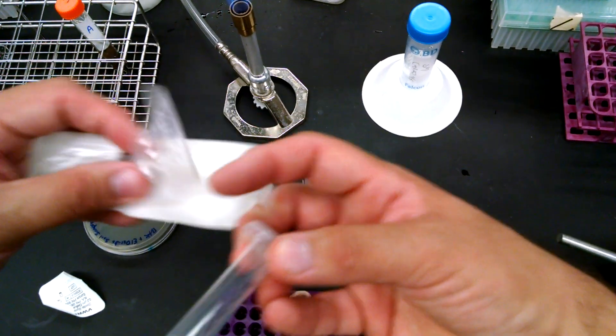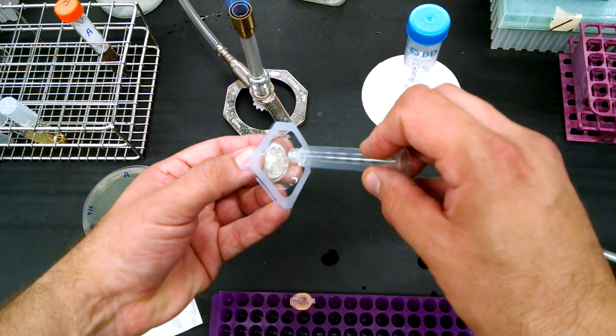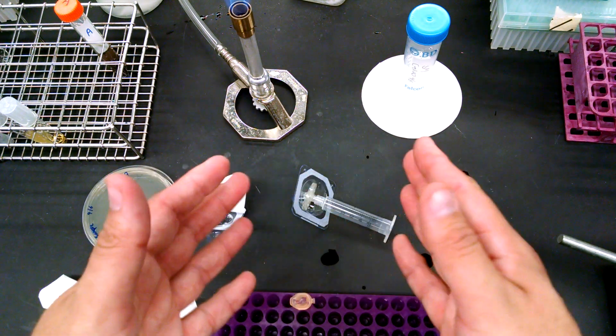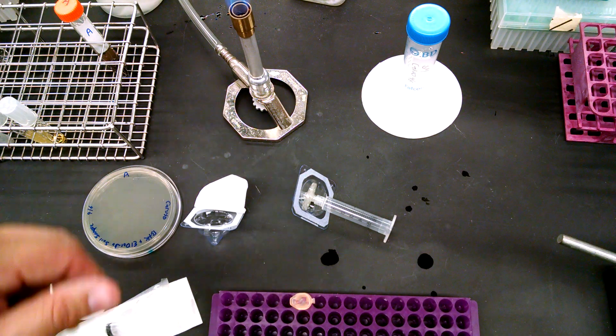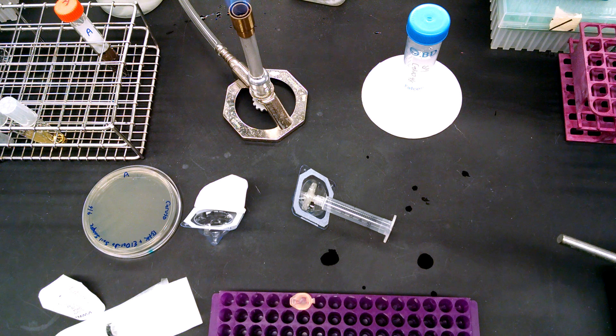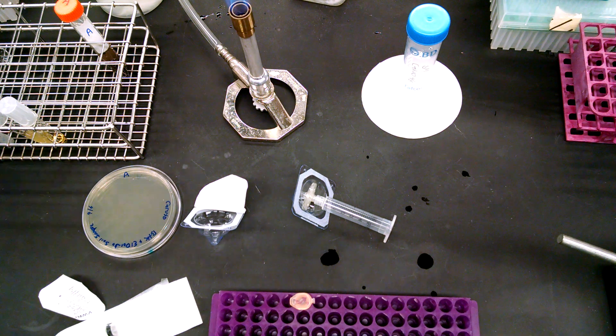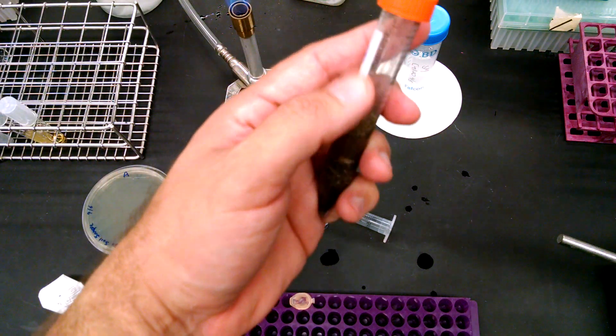We'll take the syringe, pull out the plunger and then put it back in here. Keep that clean and attach the barrel. Now you can do this with a one mil or a three mil. I'm just showing you both. And then we'll just take a pipette.